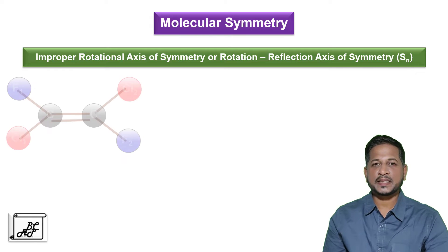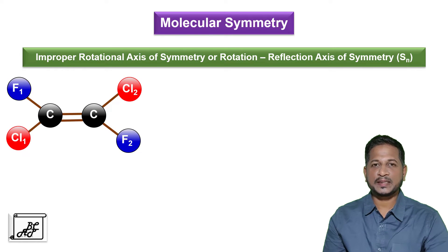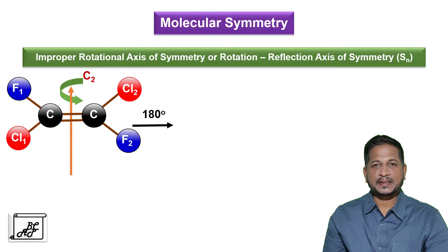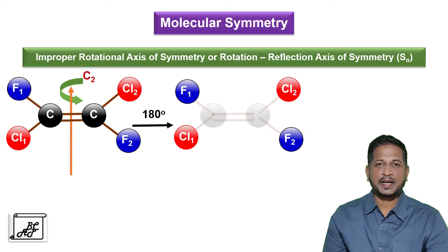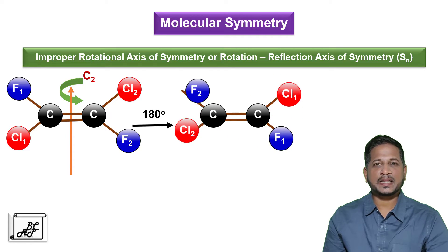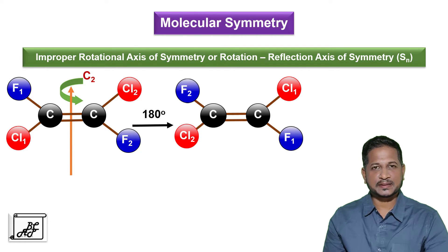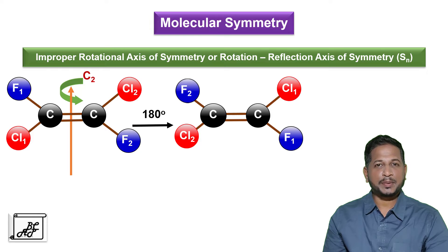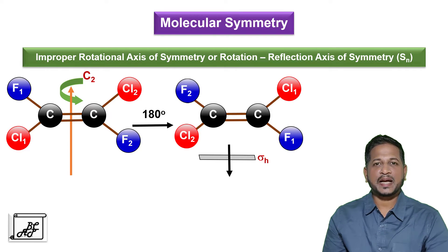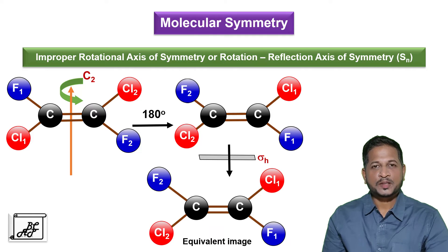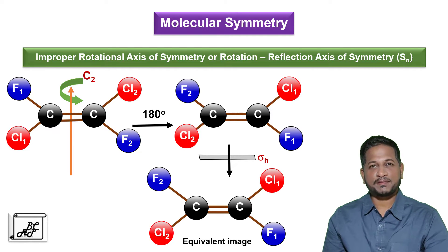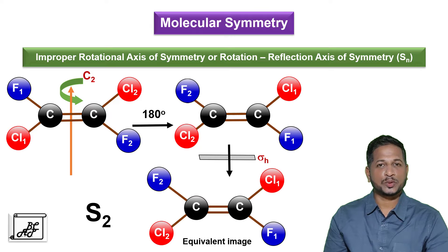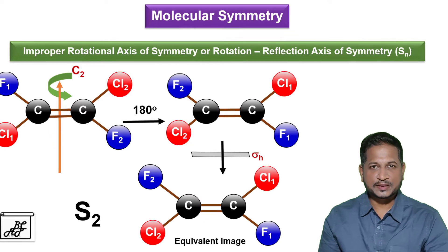Let's understand this with another example — dichlorodifluoroethylene. If I rotate this molecule through 180 degrees, that is C2 axis of symmetry, I will get an image where these atoms get exchanged, followed by reflection in a plane perpendicular to the rotational axis of symmetry. I will get an equivalent image. This is C2 rotation followed by reflection, therefore it is S2 — that is improper rotational axis of symmetry.